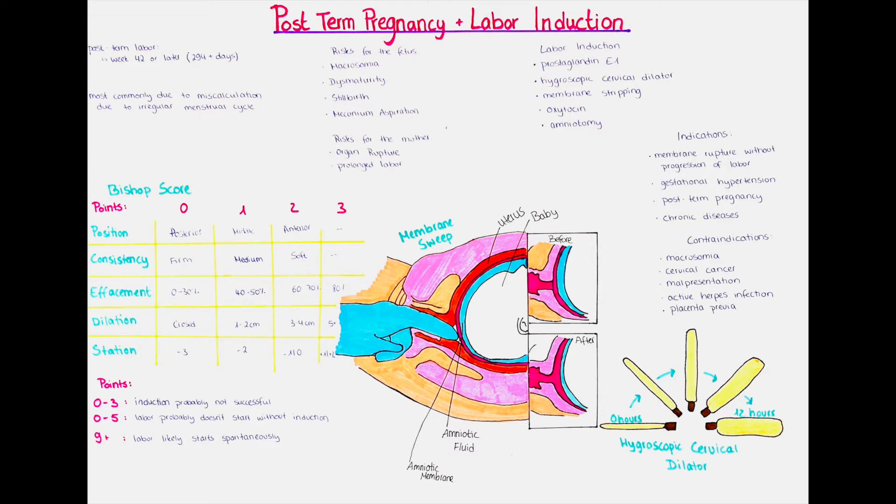In pregnancies where ovulation and fertilization were able to be calculated correctly, the exact cause is usually difficult to pinpoint. But there are a few predisposing factors, such as having had a post-term pregnancy before, having a family history of post-term pregnancy, and the patient herself having been born post-term.